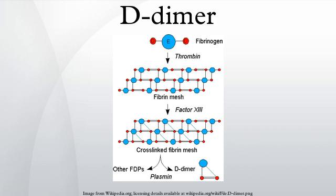Indications. D-dimer testing is of clinical use when there is a suspicion of deep venous thrombosis, pulmonary embolism, or disseminated intravascular coagulation. It is under investigation in the diagnosis of aortic dissection. For DVT and PE, there are various scoring systems used to determine the a priori clinical probability of these diseases.